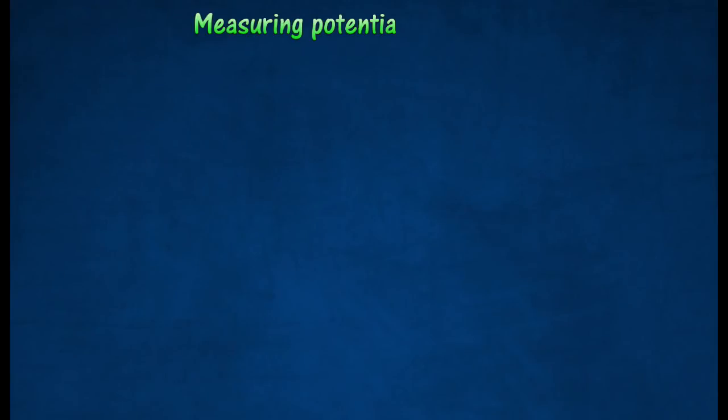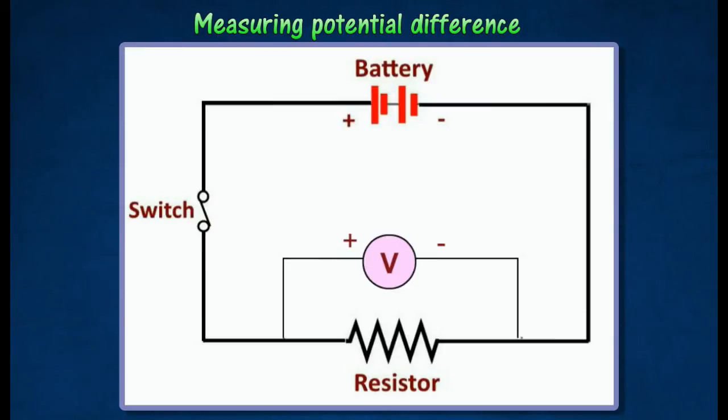The potential difference across two points in the circuit can be measured using a voltmeter by connecting a voltmeter in parallel across the component of interest. The potential difference across it can be measured.